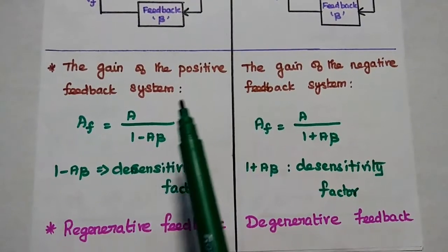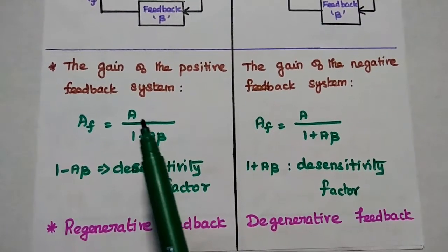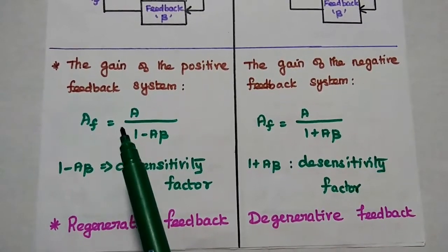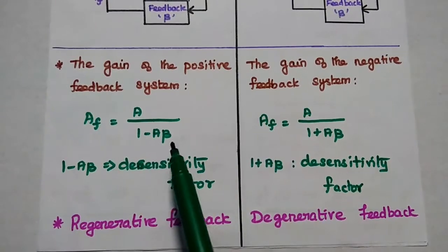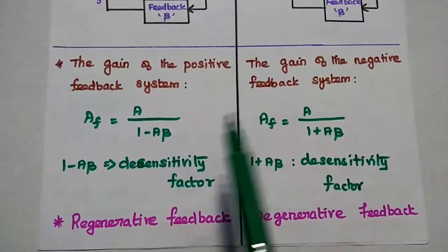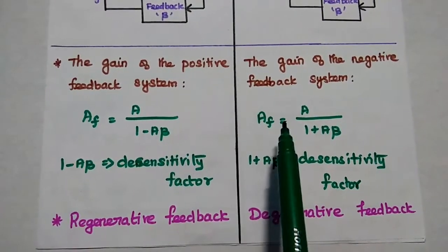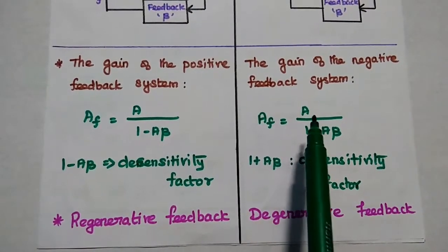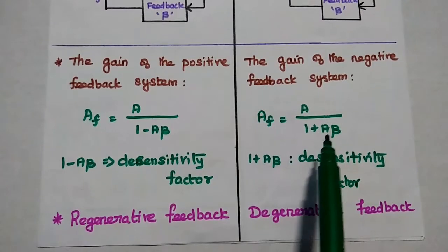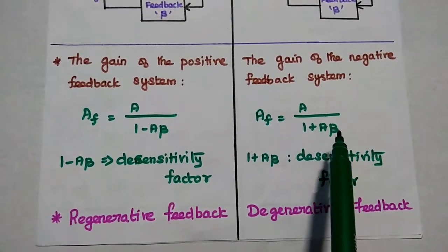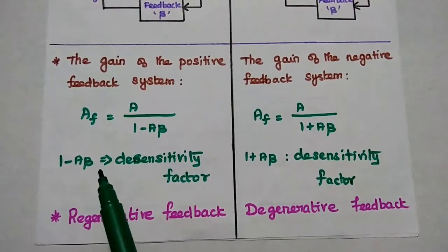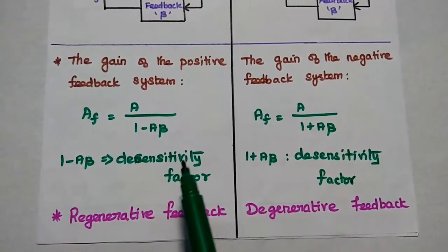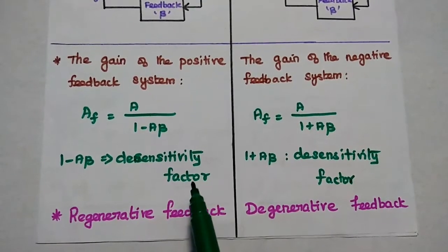The gain of the positive feedback system is represented as A_F equals A divided by 1 minus A·beta. Here the term 1 minus A·beta is represented as the desensitivity factor.